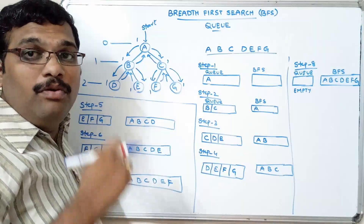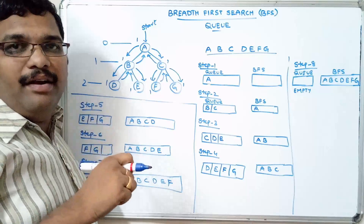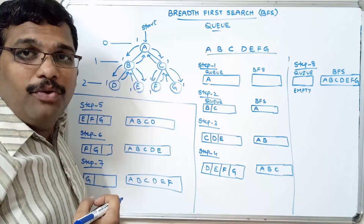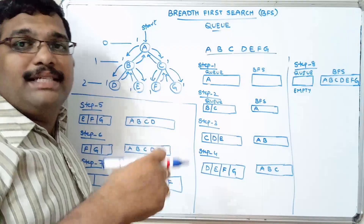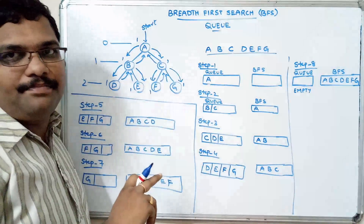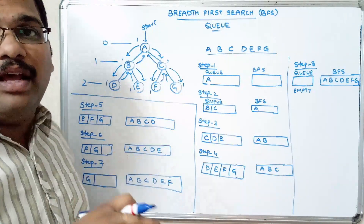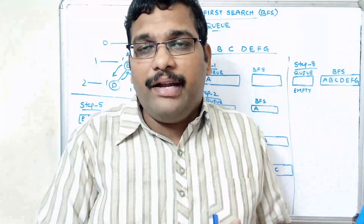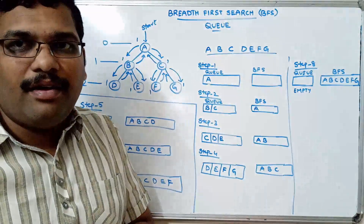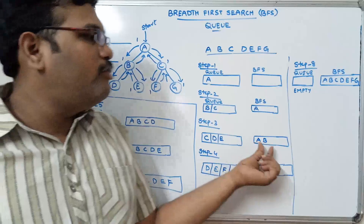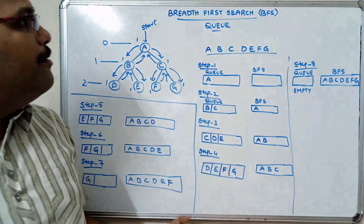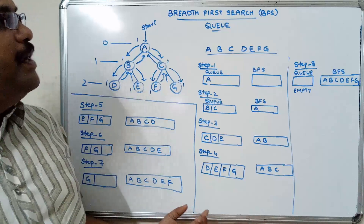In the next step we remove the first element from the front end of the queue and insert all its adjacent nodes at the rear end. All insertions are done at the rear end and all deletions are done from the front end. We delete the element and place it in BFS. This is a very simple traversal technique — breadth first search.